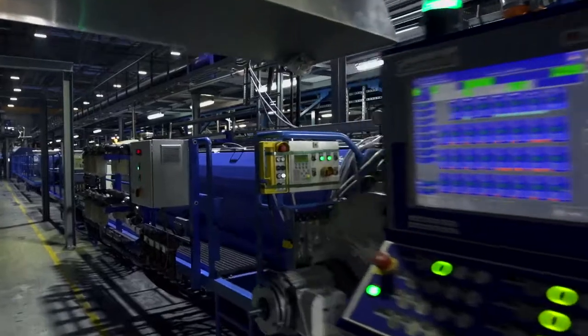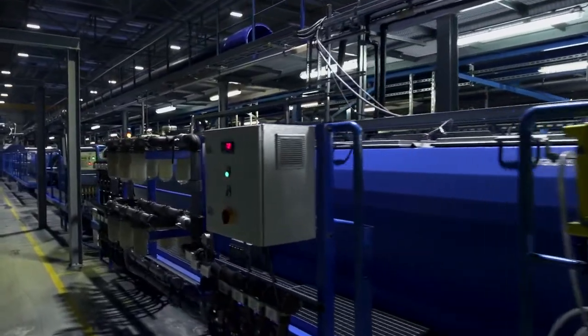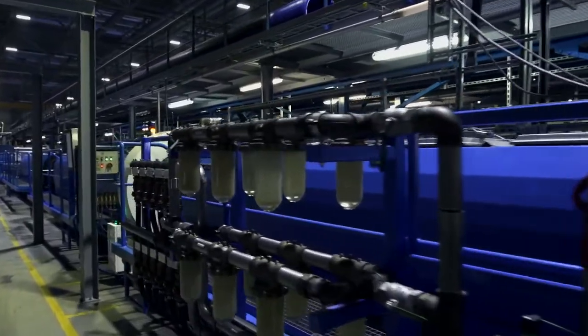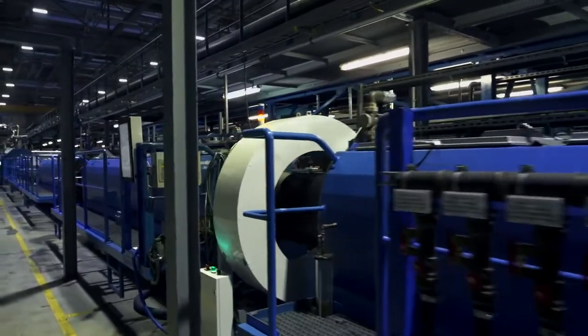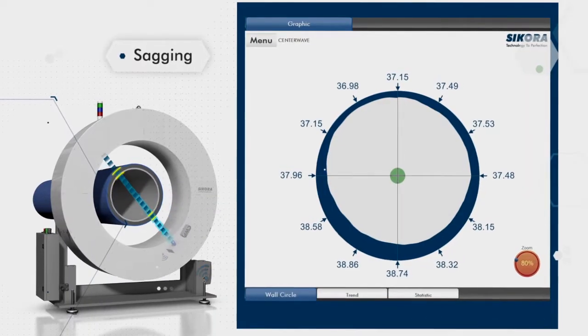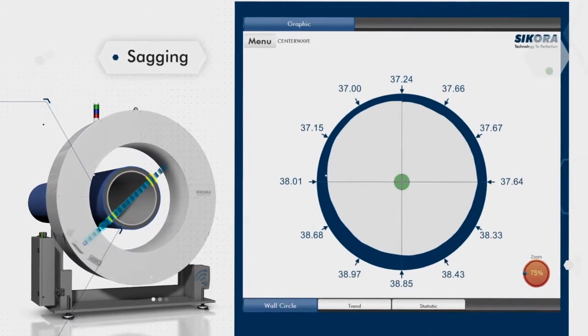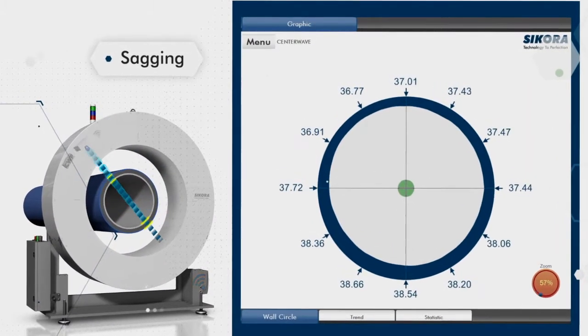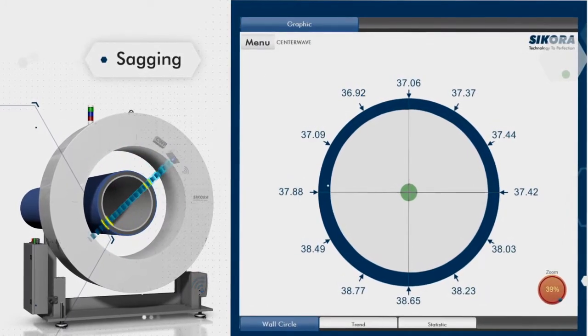Directly integrated into the production line, it helps control the process to run wall thickness, as well as inner and outer diameter on nominal values, fast and reliable. The sagging, meaning the dropping of the melt during production, is reliably identified and can be compensated accordingly.